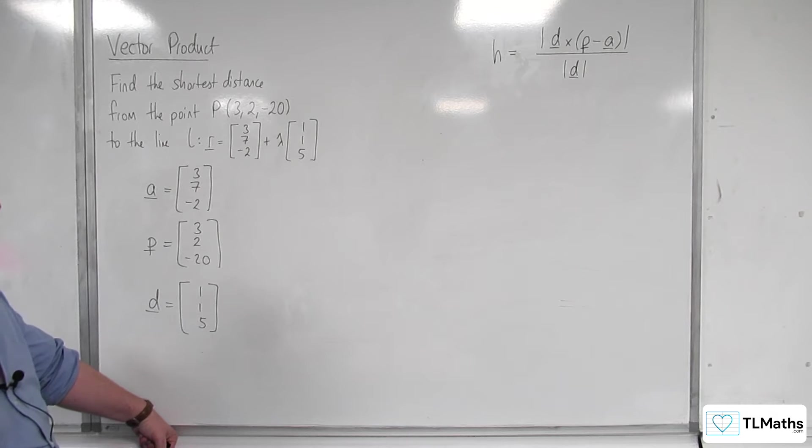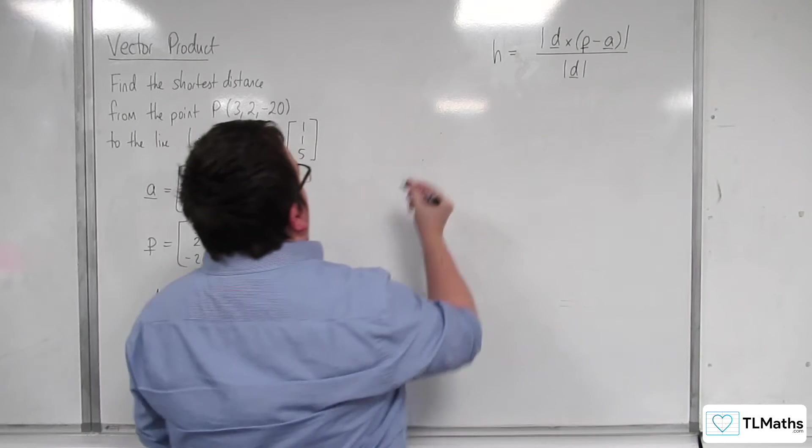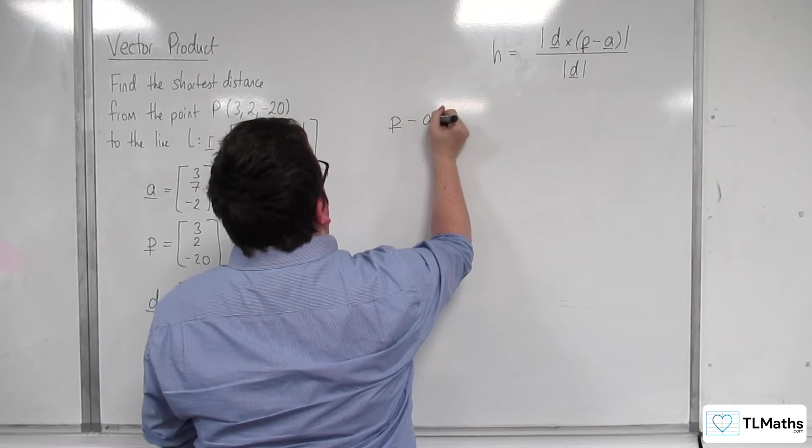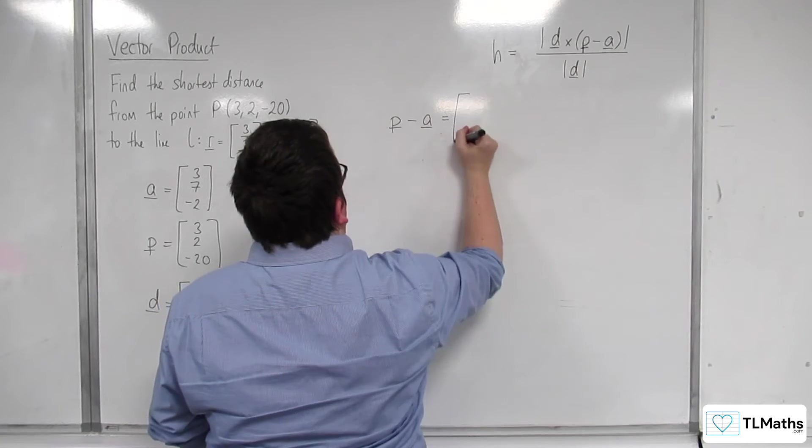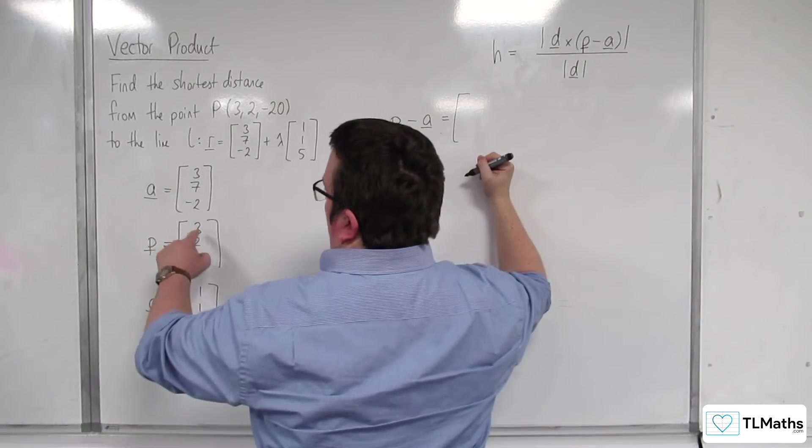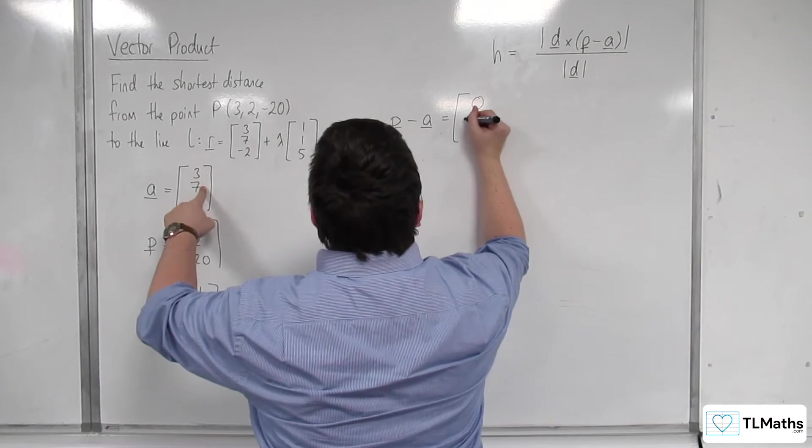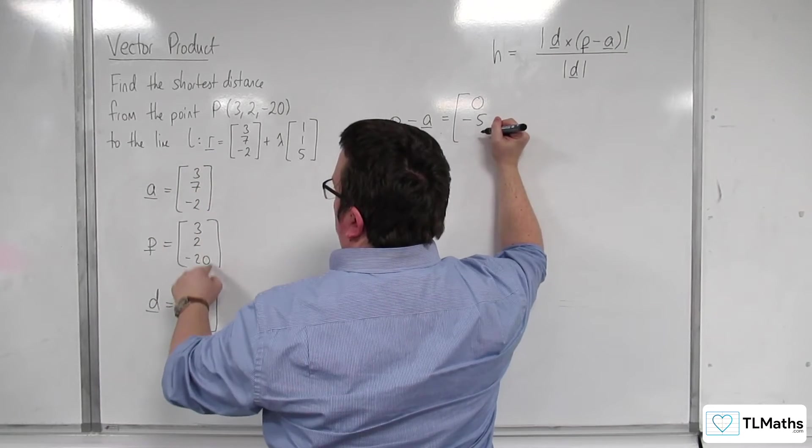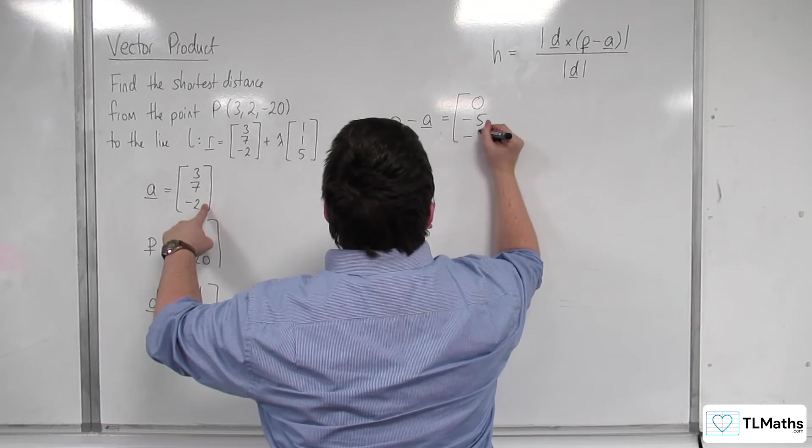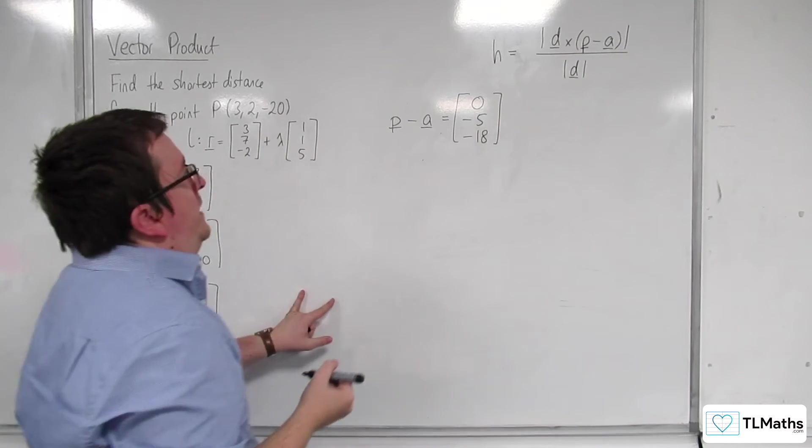We need to find P take away A. P take away A: 3 take away 3 is 0, 2 take away 7 is minus 5, minus 20 take away minus 2 is minus 18. So that's P take away A equals (0, -5, -18).